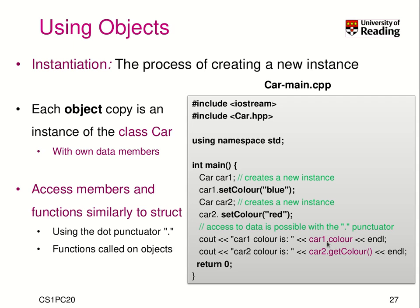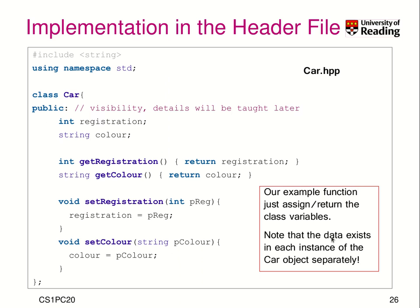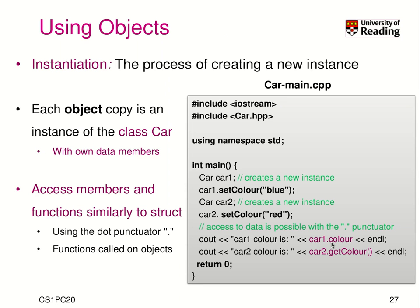We have direct access to the data member, so car1.color gives us the value of the string for the color of that car — which would print blue, because that's what we set it to. When we say car2.getColor(), it returns red, because that's the value we set. You really have to understand that those instances are different — like variables of a struct that you instantiate, they have different values of their members.